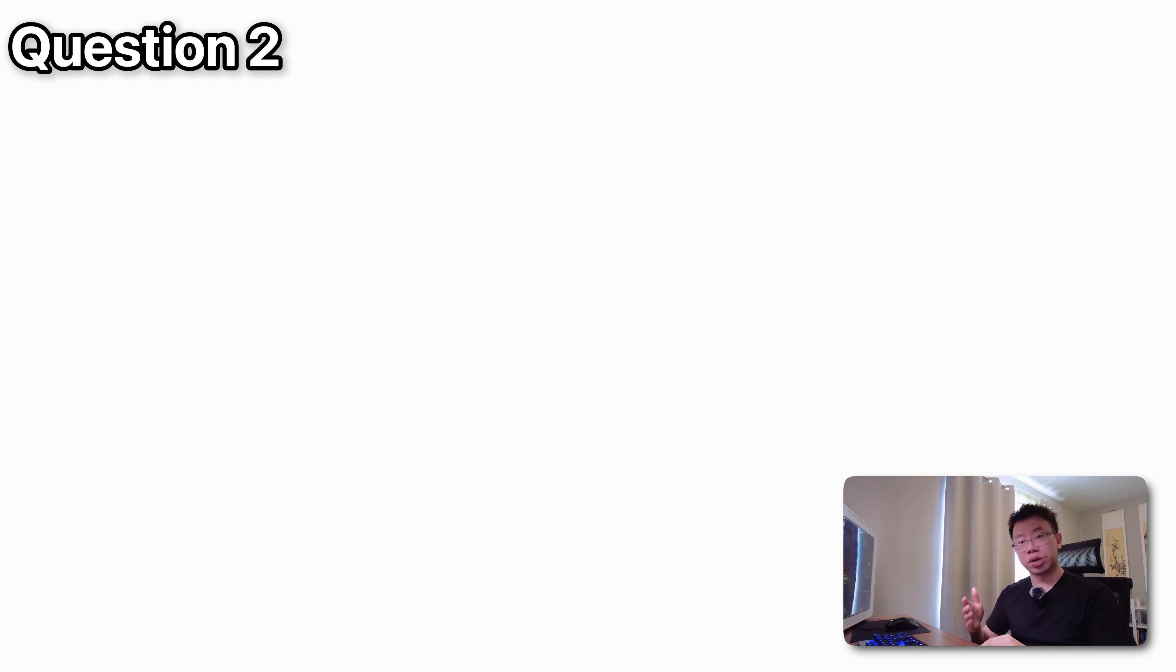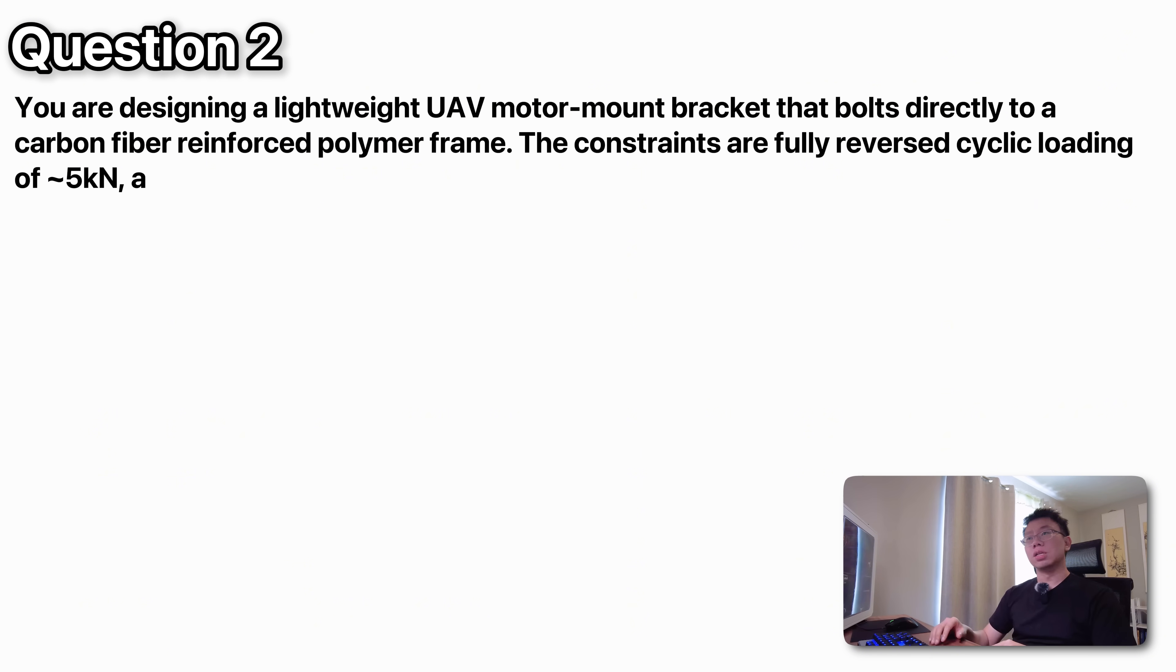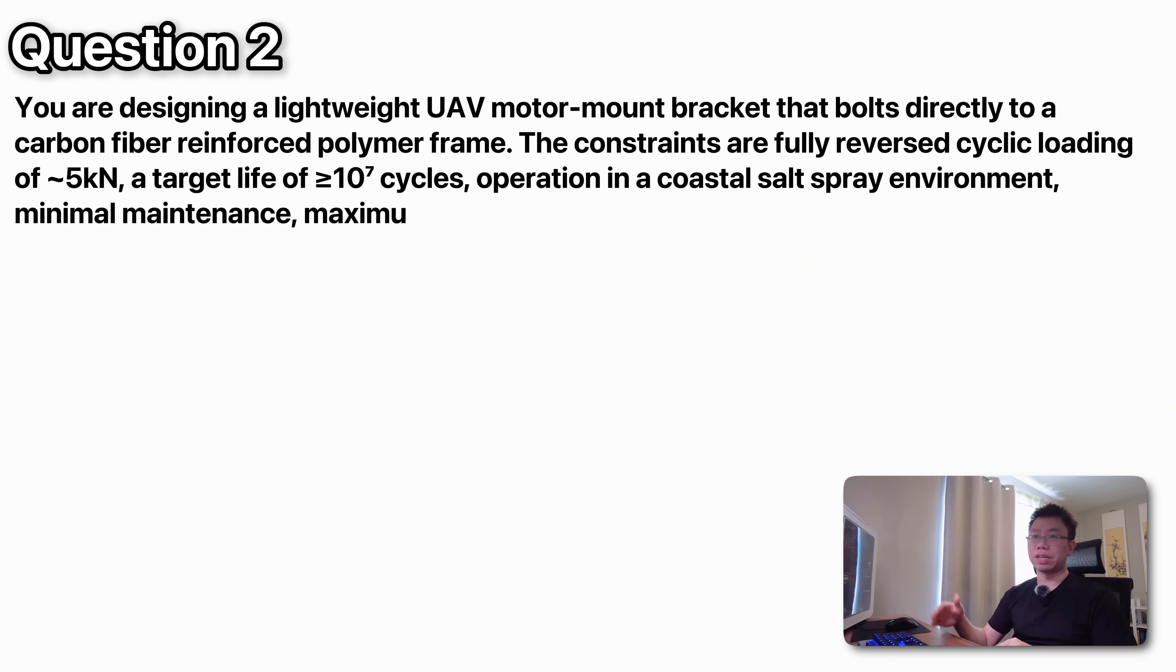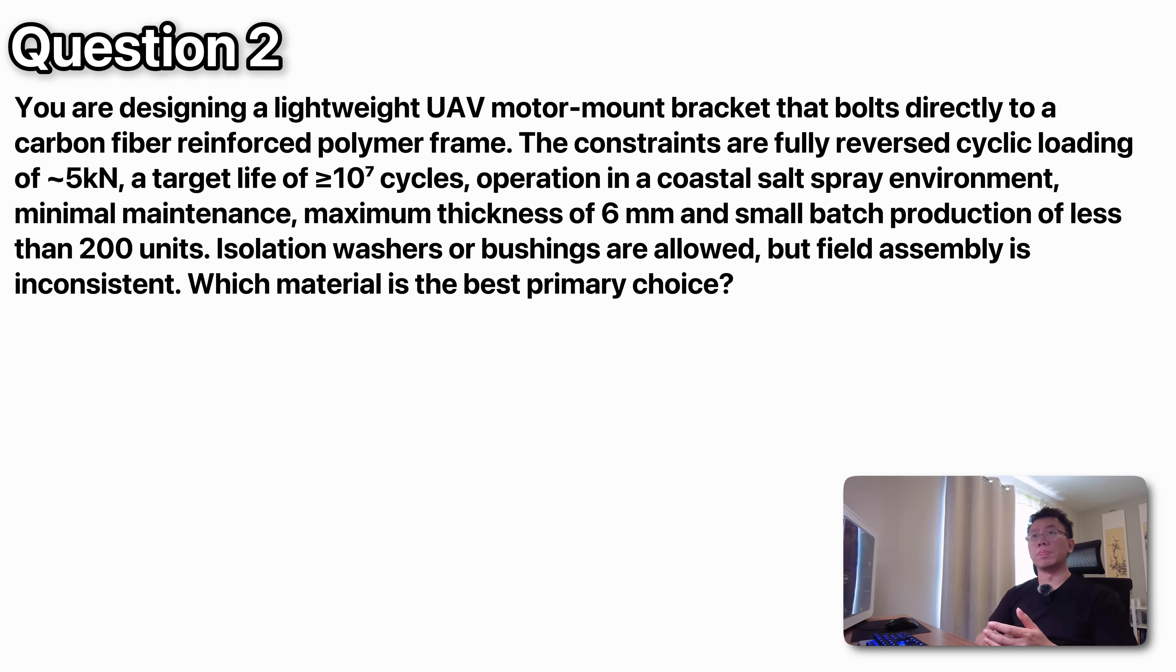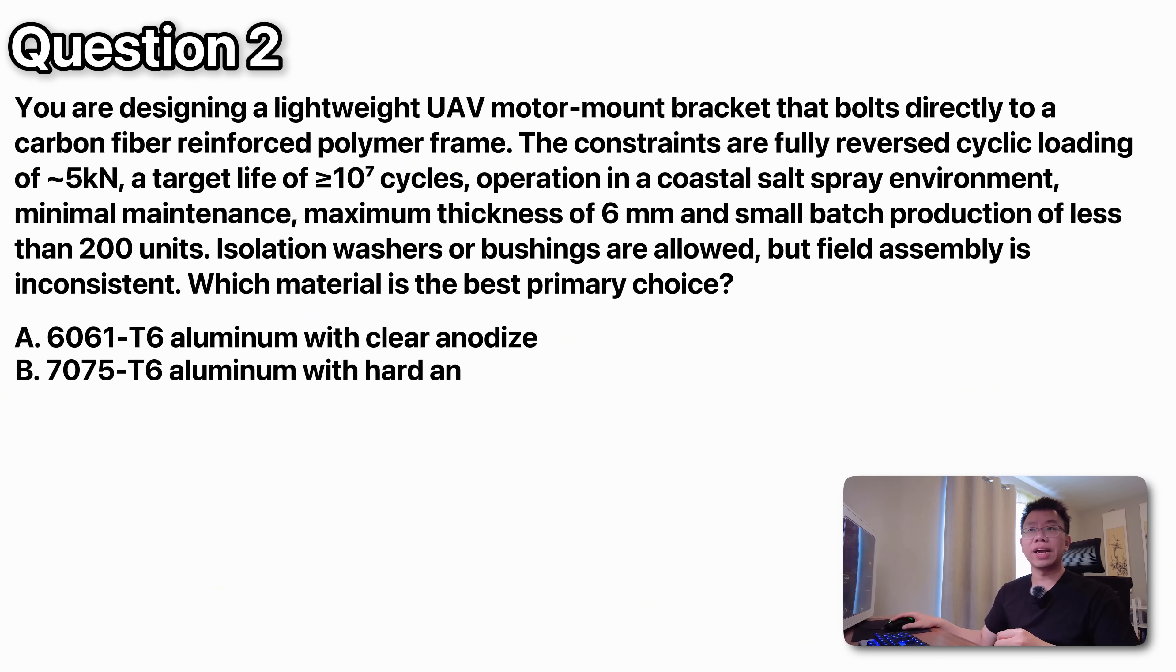Moving on, the second question focuses on material selection. You're designing a lightweight UAV motor mount bracket that bolts directly to a carbon fiber reinforced polymer frame. The constraints are fully reverse cyclic loading of about 5 kilonewtons, a target life of 10 to the 7 cycles, operation in a coastal salt spray environment, minimal maintenance, maximum thickness of 6 millimeters, and a small batch production of less than 200 units. Isolation washers or bushings are allowed, but field assembly is inconsistent. Which of the following materials is the best primary choice? The options are A 6061 T6 aluminum with clear anodized, B 7075 T6 aluminum with hard anodized, C titanium aluminum vanadium grade 5 alloy and D 174 pH stainless steel H 900. Go ahead and take a minute to think about it and then we'll go over the solution later.